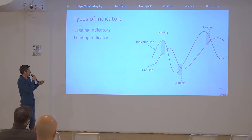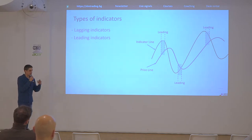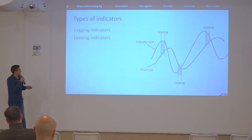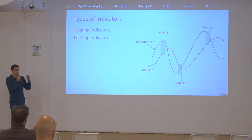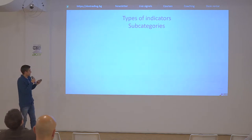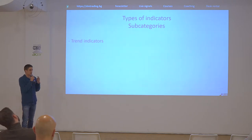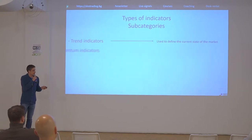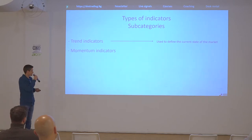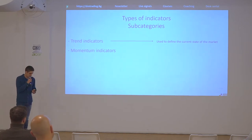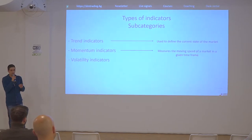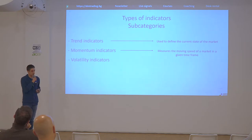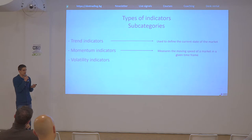All indicators that exist — and there are thousands, since it's not extremely hard to make one if you're good at math — can also be separated into four subcategories. First, we have trend indicators, used by traders to define the current state of the market: uptrend, downtrend, or range. The second type is momentum indicators, used to measure the speed of market movement at a given time frame.